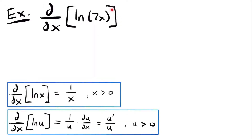Welcome back. Let's start with this example. We have the derivative d/dx of the natural log of 7x. In order to take the derivative of a natural log function, you need to know two different rules. The derivative of the natural log of x is equal to 1 divided by x, given that x is a positive value, because the natural log function is only defined for positive values.